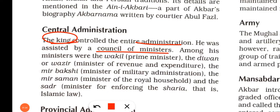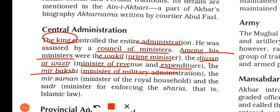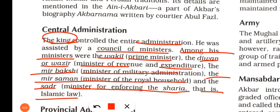The king was assisted by a council of ministers. Among his ministers were: the Vakeel (prime minister); the Diwan or Wazir (minister of finance and revenue expenditure); the Mir Bakshi (military commander or minister of military administration); the Mir Saman (minister of the royal household); and the Sadr, who was the minister for enforcing Sharia, i.e., Islamic law.